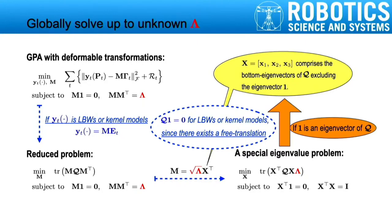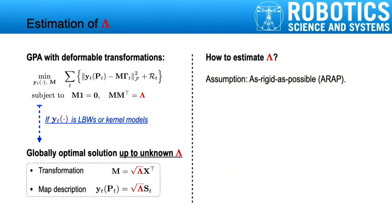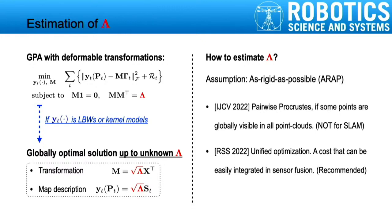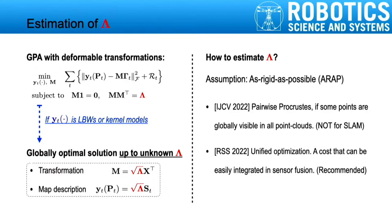Following the discussion in our RJCV paper, this is due to the existence of a free translation in the transformation model. Now we have solved the problem up to an unknown lambda. The next step is to determine lambda with additional assumptions. Here we assume the transformation to be as rigid as possible.